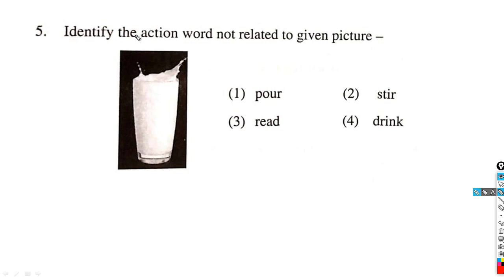Question number 5: Identify the action word not related to the given picture. You have to identify which is not related to the action or the given picture. Aisi kaun si action hai jo is picture mein nahi dikh rahi hai? Is picture mein kaun kaun si action dikh rahi hai?